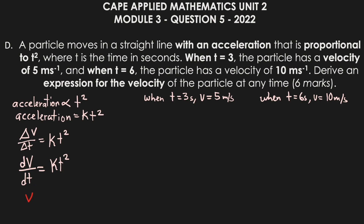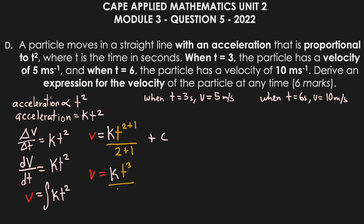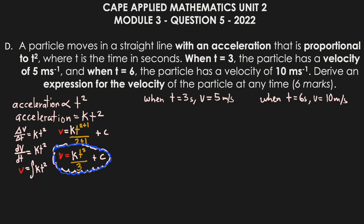So v is equal to the integral of k·t². Since k is a constant and we're integrating with respect to t, we add one to the power and divide by the new power: two plus one gives three. So we get v equals k·t³ divided by 3, plus a constant c. This is our expression so far, but we need to find the values of k and c to complete it.